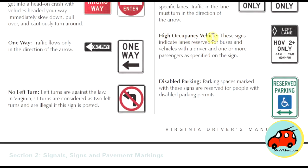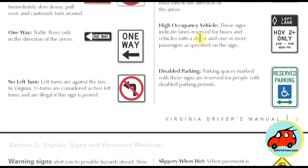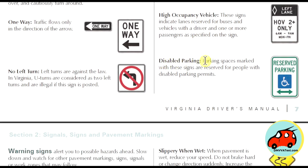High occupancy vehicle signs indicate lanes reserved for buses and vehicles with a driver plus one or more passengers as specified. You can only use the HOV left lane if you have two or more passengers, only between 6 a.m. and 9 a.m., Monday through Friday. Parking spaces marked with disabled parking signs are reserved for people with disabled parking permits.